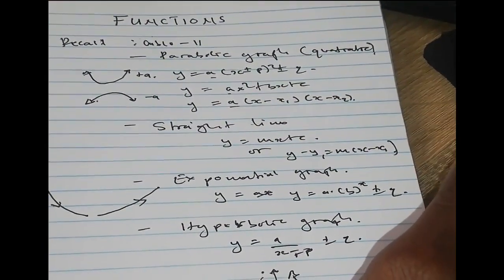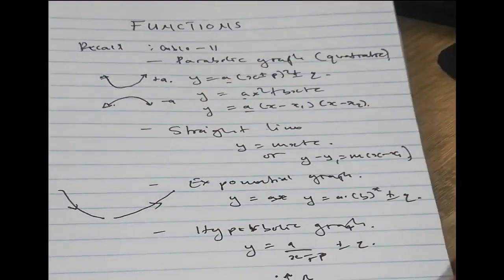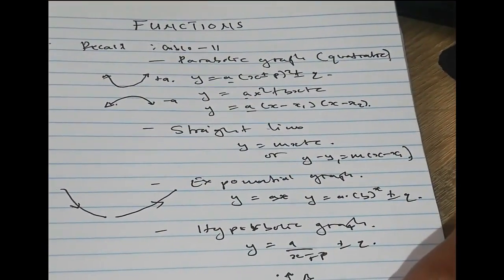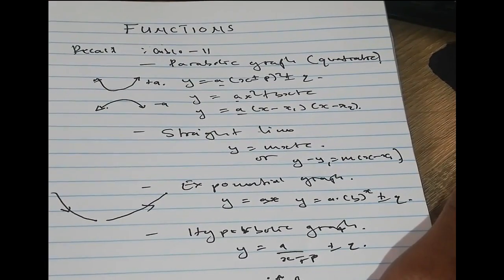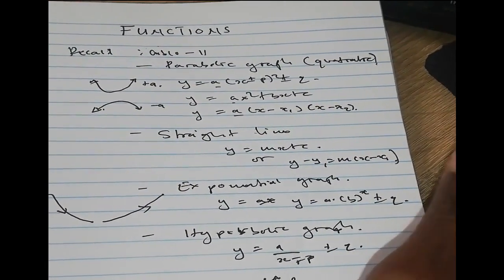The parabola can either be smiling or sad depending on the value of a — negative a gives a sad shape and positive a gives a smiling shape. That's what you need to know before we go into functions.